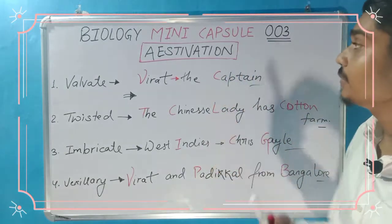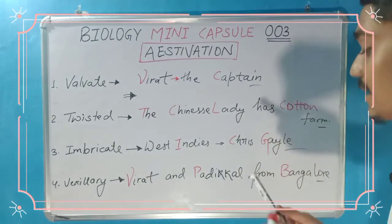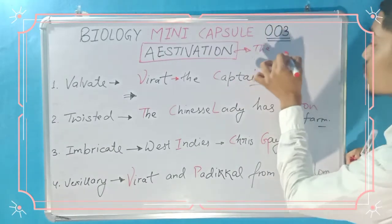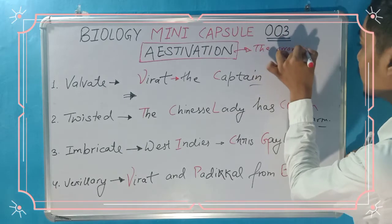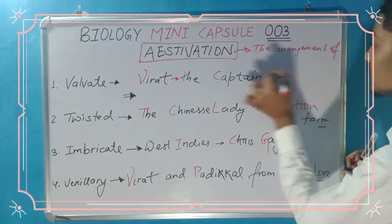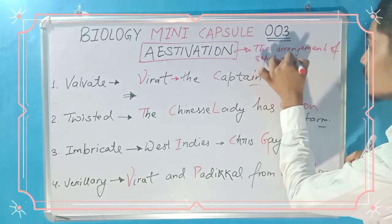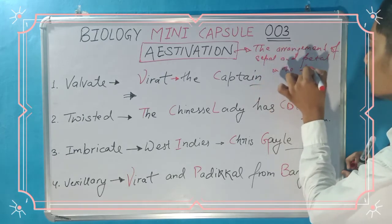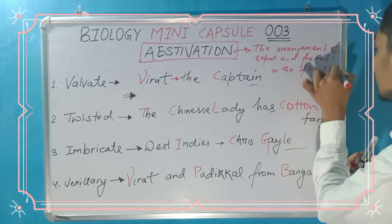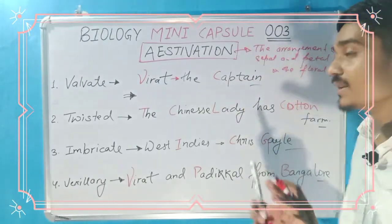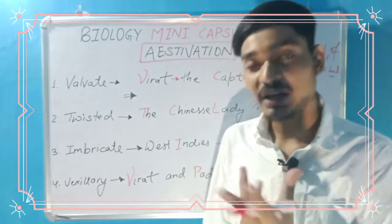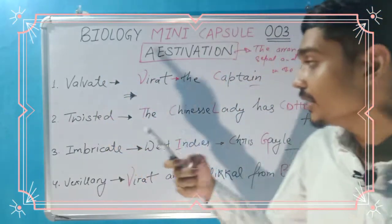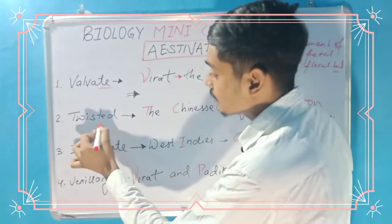First of all, we will see what is aestivation. Aestivation is the arrangement of sepals and petals. So aestivation means the arrangement of sepals and petals. We will tell you four types of aestivation: first is valvate, second is twisted, third is imbricate, and fourth is vexillary.